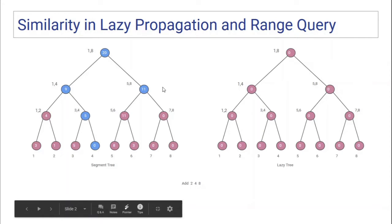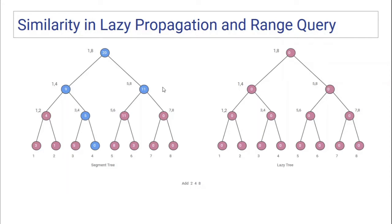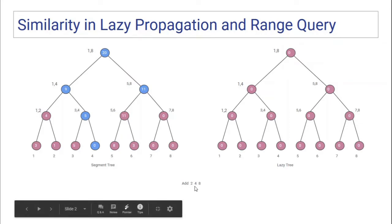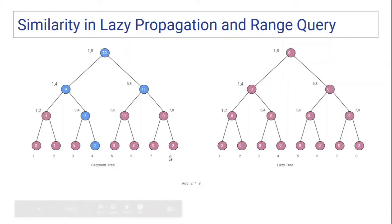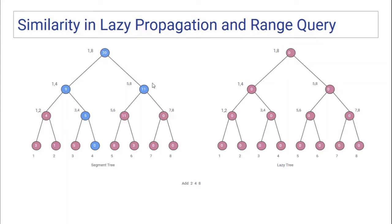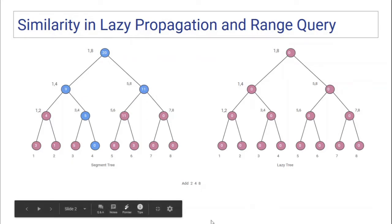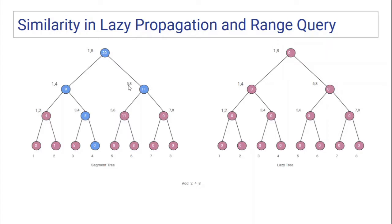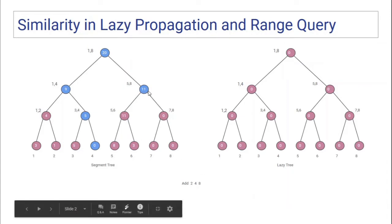I'm going through these again so that when I show you the code, this looks familiar. So we have a query to update range 4 to 8 and add 2 to all elements in that range. You go to the parent node, start from there — the range doesn't completely lie inside, but there are overlaps, so you make two recursive calls to update left and right. Once you reach the right node, you see that 5 to 8 lies completely inside the query range of 4 to 8, so this whole node should be updated. Since the range contains 4 elements and each is incremented by 2, the overall increment is 4 times 2, which is 8.